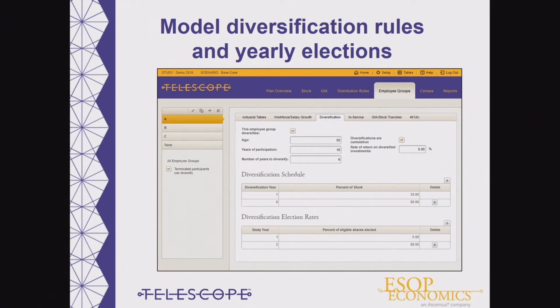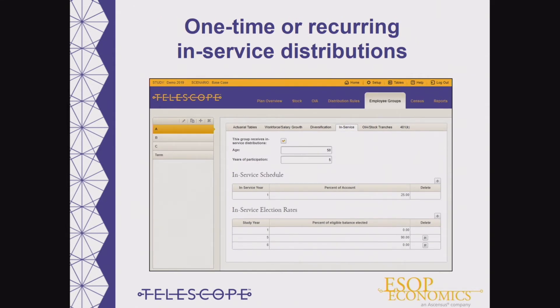Telescope also has the capacity to model distributions based on your plan document requirements. You can model a single diversification election rate, or change your diversification election rates by year to reflect what you believe is going to happen in the future. Telescope even allows you to model an in-service distribution — whether it's a one-year or an ongoing in-service distribution — giving you flexibility to project these additional distributions in your ESOP. And if you have a 401k component to your ESOP, we can model that also.